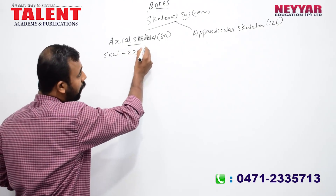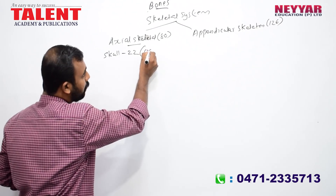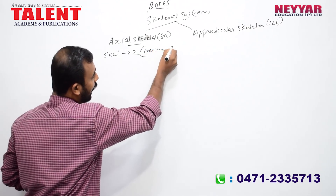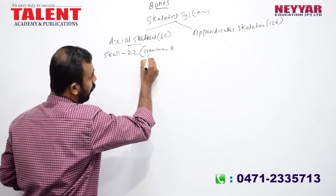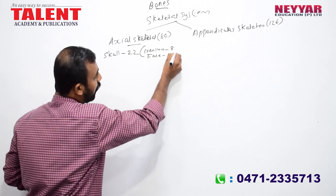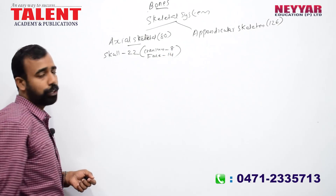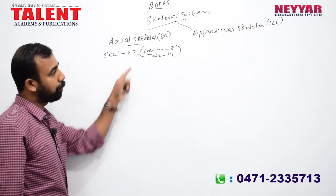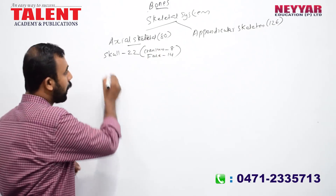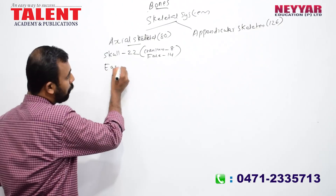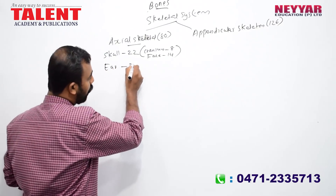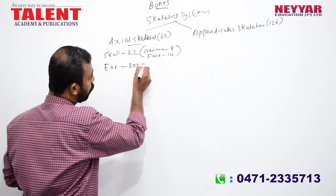These are two divisions. The cranium has 8 bones, and the face has 14 bones — together making 22 bones in the skull. We also have 3 bones in each ear, making 6 ear ossicle bones total.